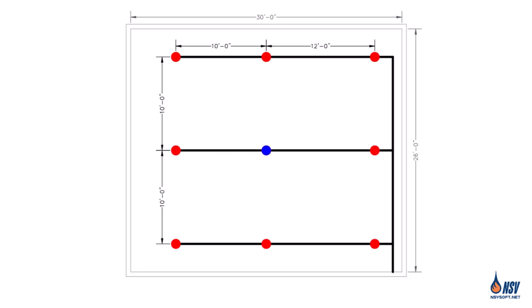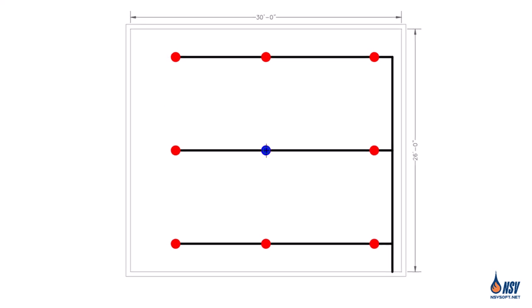In the second example, the sprinklers are slightly non-uniformly spaced. However, the S by L method remains applicable. In this case, S is 12 feet and L is 10 feet, giving us a sprinkler coverage area of 120 square feet.